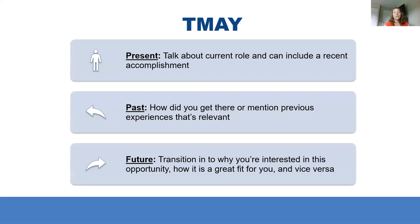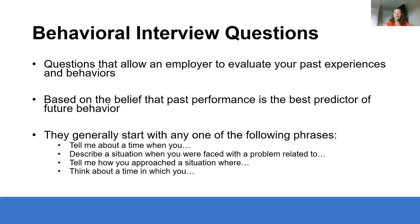For 'tell me about yourself,' here's a framework: start with the present — what is your current role, and maybe a recent accomplishment. Then talk about your past — what have you done previously to get to where you are now. Finally, talk about the future — why you're interested in this position and how your experiences make you a perfect candidate for this role. Keep this fairly concise — about 15 to 30 seconds — because it's just a short bio to get the conversation started.